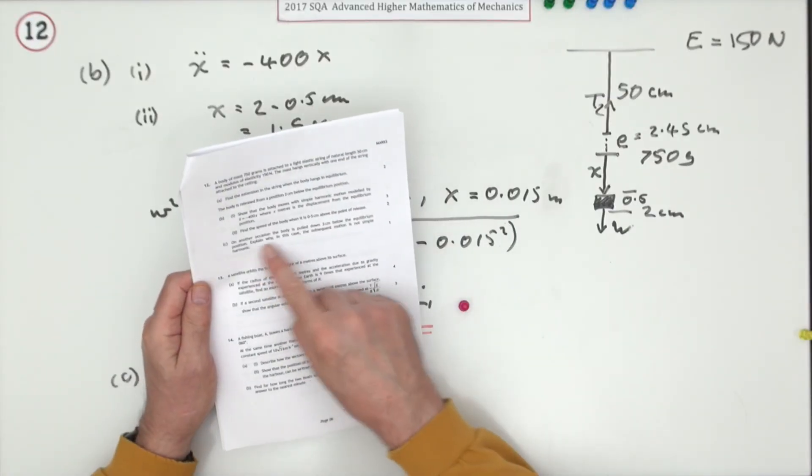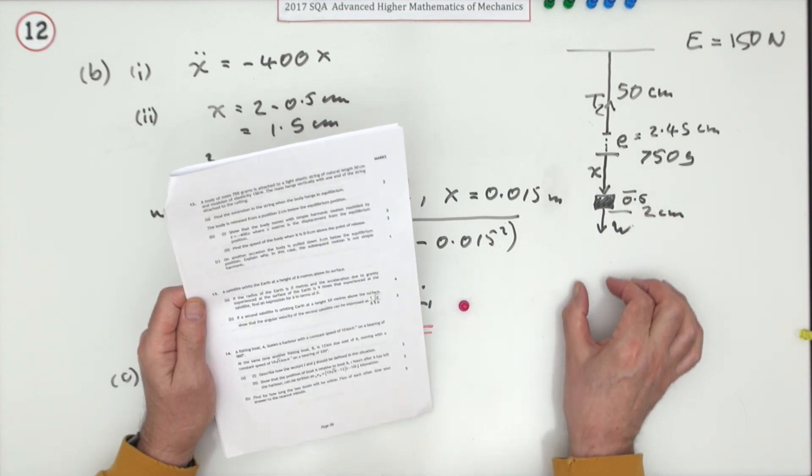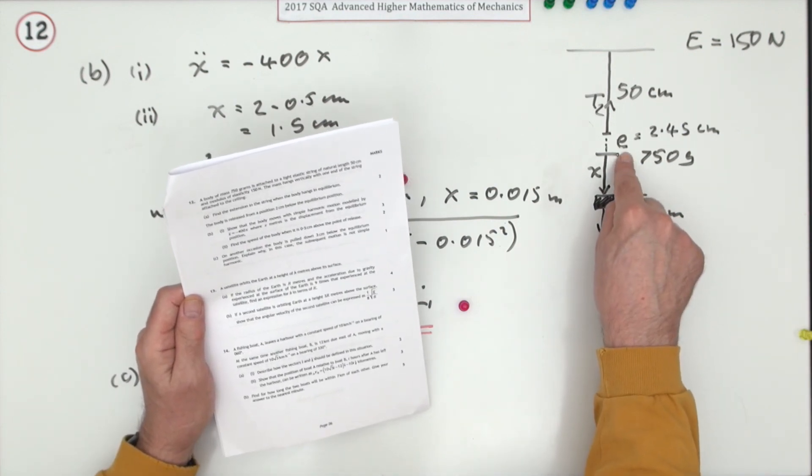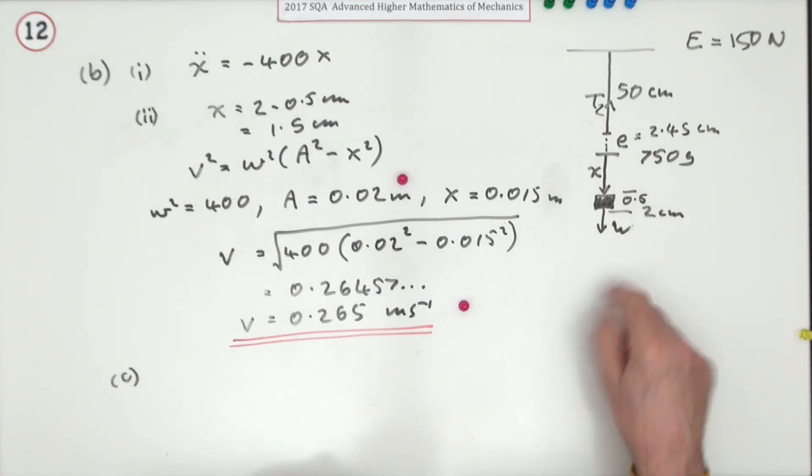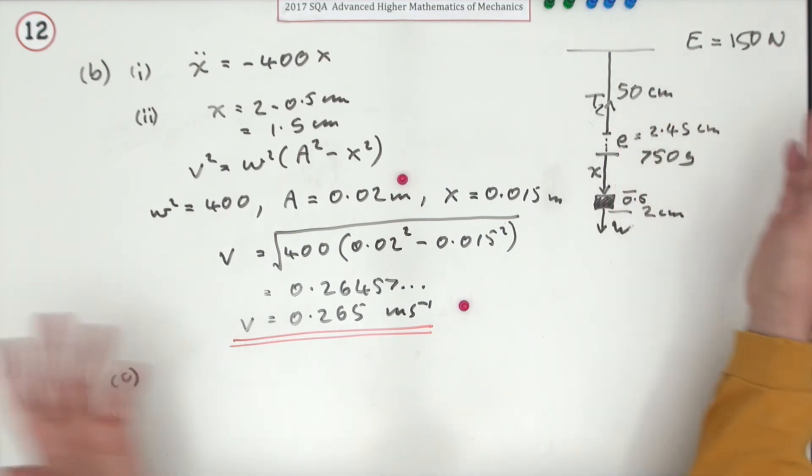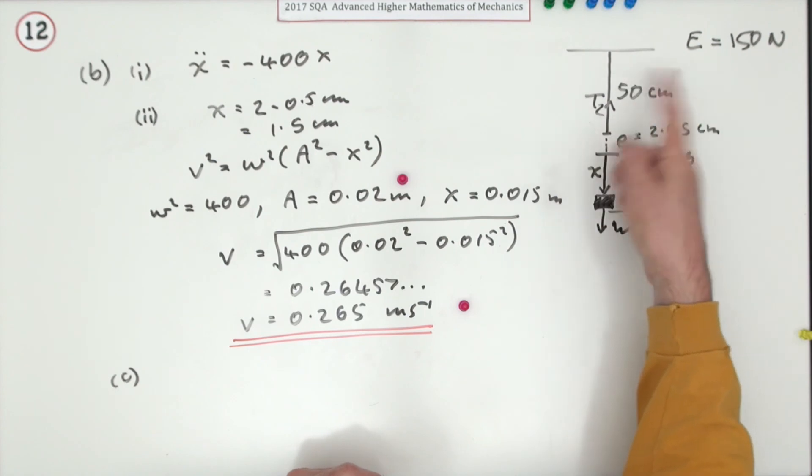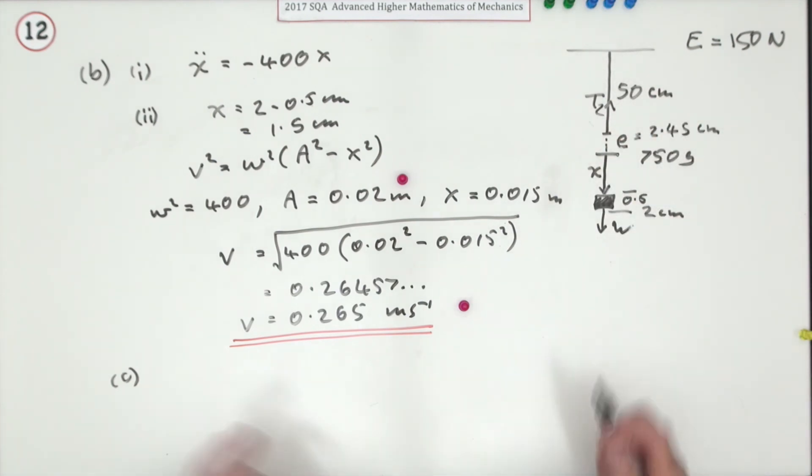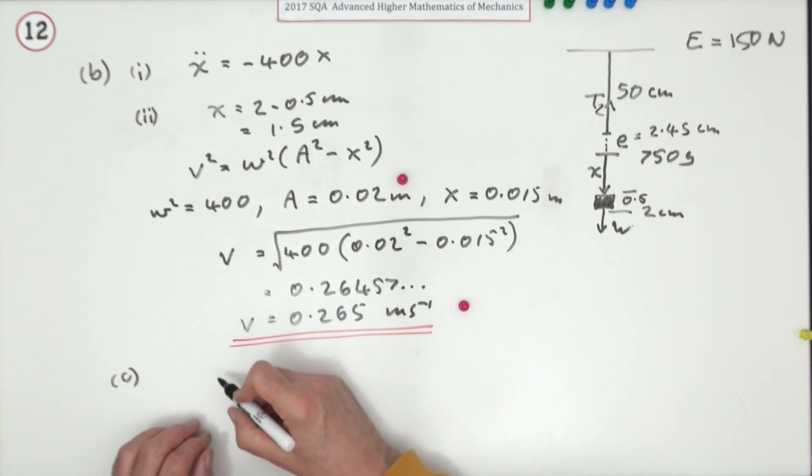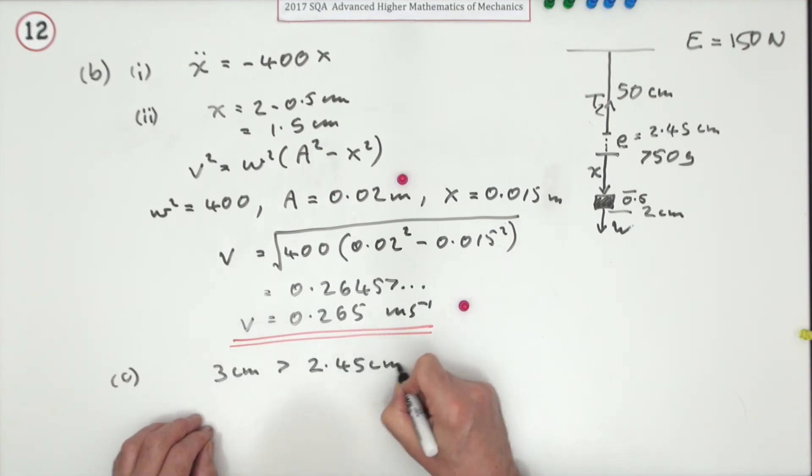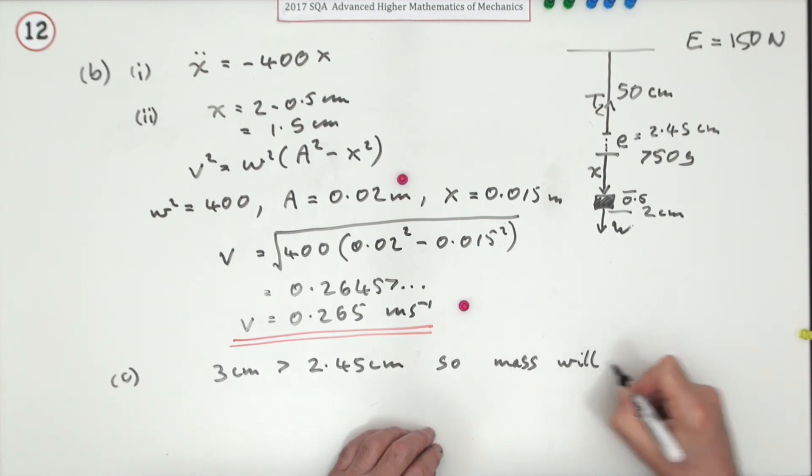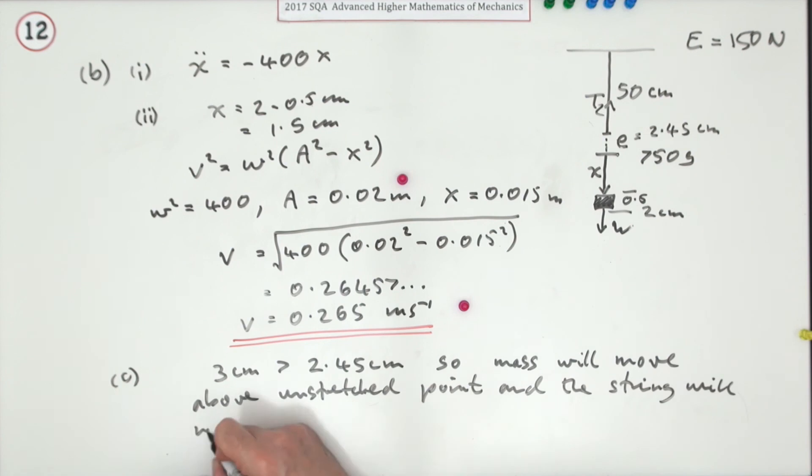Part c: on another occasion the body is pulled down 3 centimeters below the equilibrium position. Explain why the subsequent motion is not simple harmonic. Well, you've just pulled it too far. On its way up as it passes the equilibrium position, it's going to go beyond the initial unstretched value, so there'll no longer be any tension, so it'll no longer be in simple harmonic motion. The obvious thing is 3 centimeters is greater than 2.45 centimeters, so the mass will move above the unstretched point and the string will no longer be in tension. Not in simple harmonic motion. Last mark of the whole question.